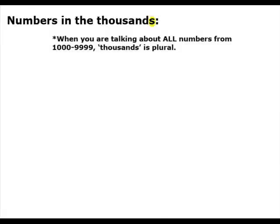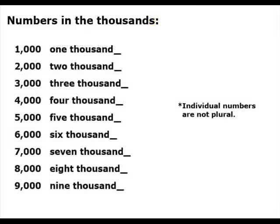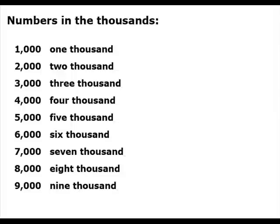When you are talking about all numbers from 1,000 to 9,999, the word 'thousands' is plural. But in individual numbers, 'thousand' is not plural. When you count numbers in the thousands, you start at 1 and keep going: 1,000, 2,000, 3,000, and so on.